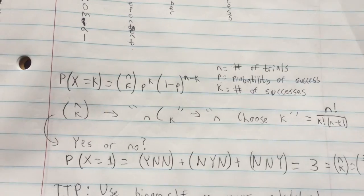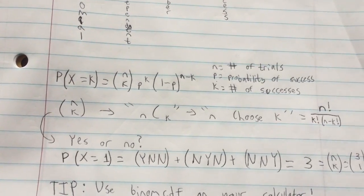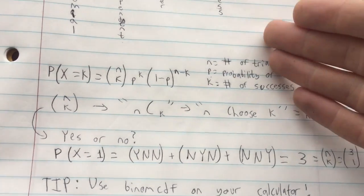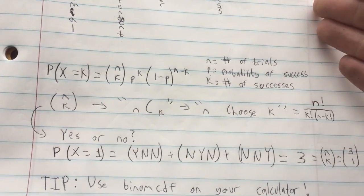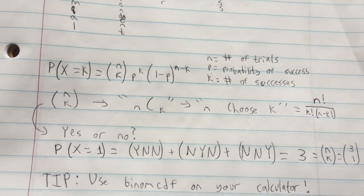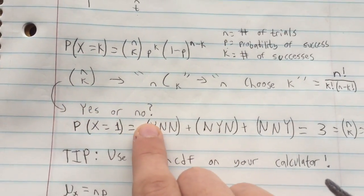So if you have a group of three people and you have one success in that group, person number one could be the success, person number two could be the success, or person number three could be the success. So here, see here, here's an example.